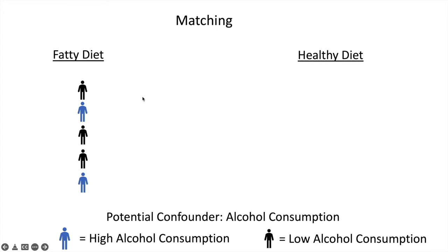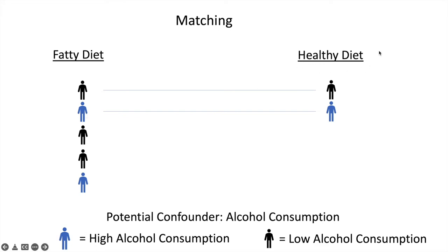Another common methodological method is matching. The goal is the same — to have the distribution of high alcohol consumption be as similar in the fatty diet group as in the healthy diet group. We can force that to be true by individually matching people in the two groups by alcohol consumption. The first person in the fatty diet group has low alcohol consumption, so we find someone with a healthy diet who has low alcohol consumption. The next person has high alcohol consumption, so we find a healthy diet person with high alcohol consumption. We do that for everyone, and then we've forced the groups to be the same with respect to this confounder, so it can't be distorting the results.